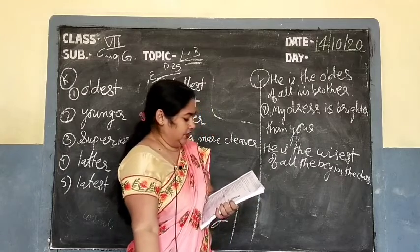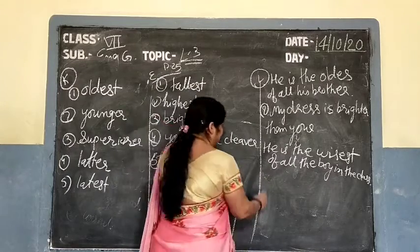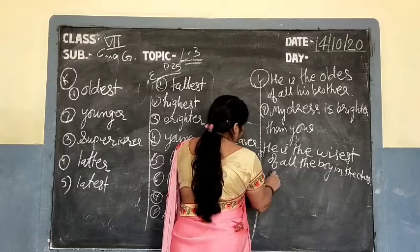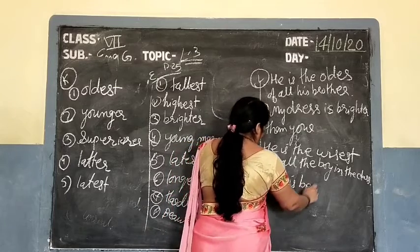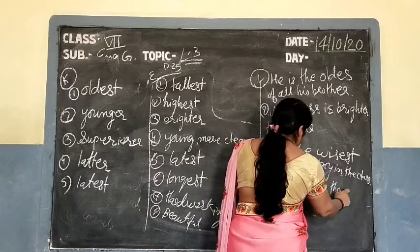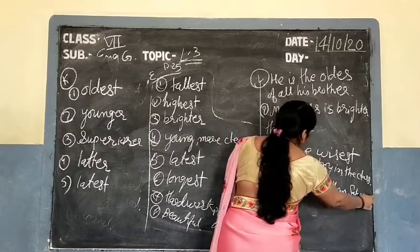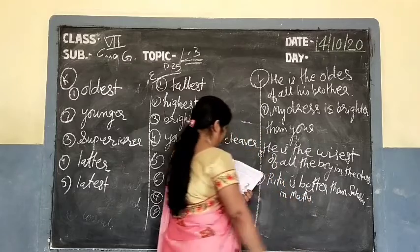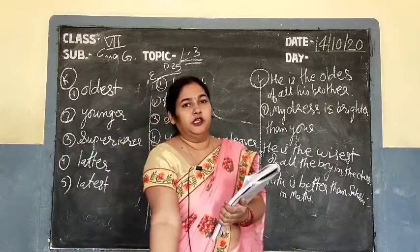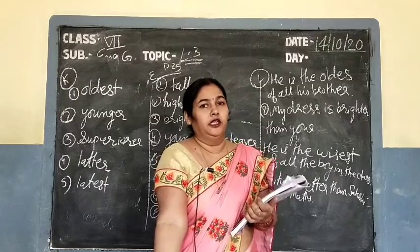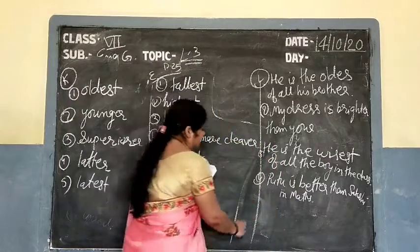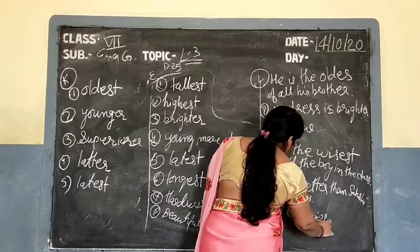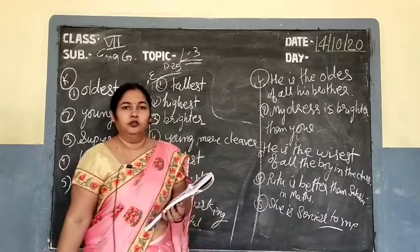Ritu is dash — comparing with Sakshi in Maths — two persons are being compared, so it is comparative degree: Ritu is better than Sakshi in Maths. Next: C is senior than me — with words like 'senior', 'junior', 'superior', 'inferior', we do not use 'than'; we use 'to' — so the correction is: C is senior to me.